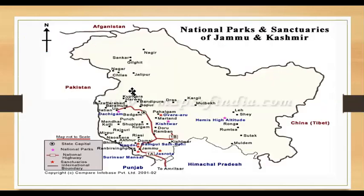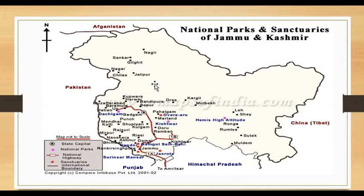Some national parks and sanctuaries of Jammu and Kashmir also serve as butterfly hotspots, including Hemis High Altitude National Park, Overa-Aru in Kashmir, Kishtwar National Park, Dachigam National Park, Nandini Wildlife Sanctuary, and Surinsar-Mansar Wildlife Sanctuary. All these sites are hotspots where we can observe many butterflies and their behaviours such as mud-puddling.